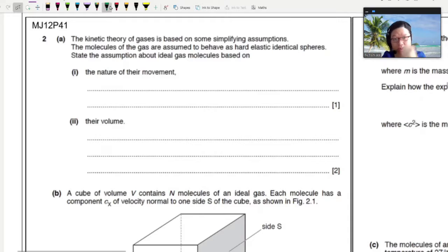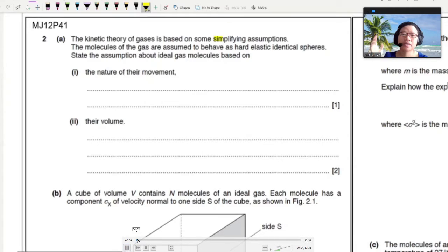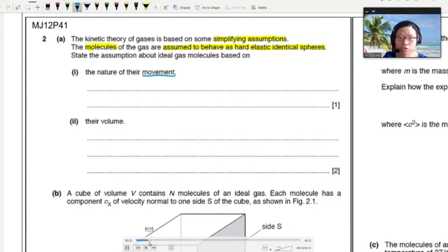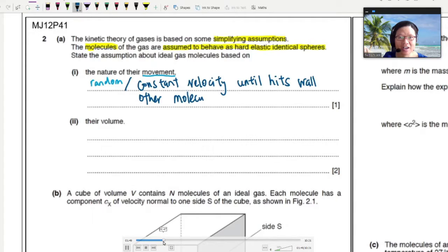They move in all directions. So state the assumption about ideal gas based on the nature of their movement and the volume. I think you should think of terms that are pretty common that we mentioned in the lecture, which is random, rapid, or jerky. Also the fact that they have constant velocity until it hits the wall of the molecule. It wouldn't suddenly change velocity halfway. Random and jerky is the best way to talk about it.